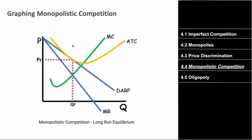Here's the graph for monopolistic competition. You see marginal cost like a Nike swoosh, ATC, demand, and marginal revenue. It's very similar to monopoly, but the graph changes from the short run to the long run. In the long run, average total cost equals the demand curve at the profit-maximizing point — the ATC glides over the demand curve — because so many firms enter that it resembles perfect competition with only normal profit.